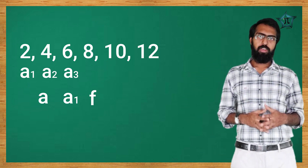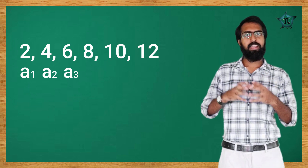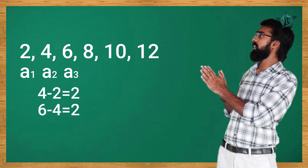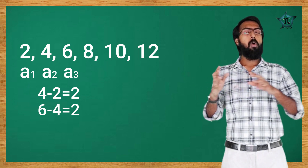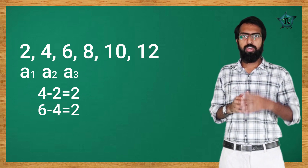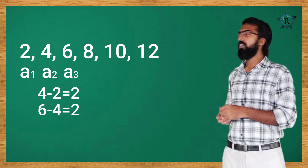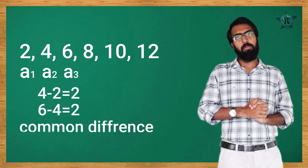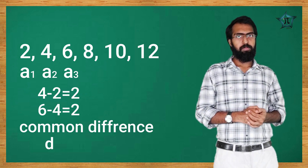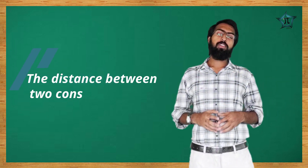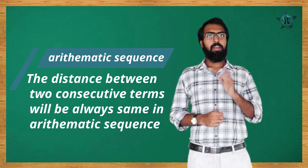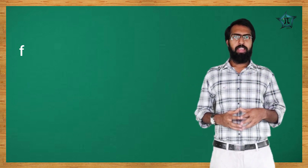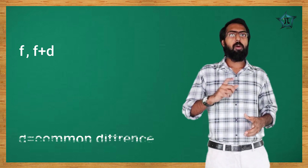The difference between consecutive terms is constant. For example, 4 minus 2 is 2, and 6 minus 4 is 2 — the same constant difference. Because the same constant is added each time, this is an arithmetic progression. This constant difference is called the common difference, denoted by d. The distance between two consecutive terms is always the same in an arithmetic sequence.